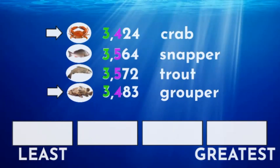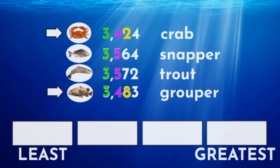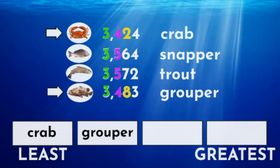Can you see which two catches have the least value in the hundreds place? Correct — it's the crab and grouper. Both show a value of four hundreds. We must move one more digit over to compare them. The crab has a two in the tens place and the grouper has an eight in the tens place. This means the crab has the least value of all our catches, and the grouper is the next least.